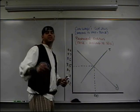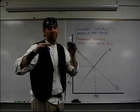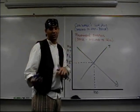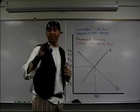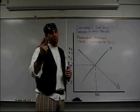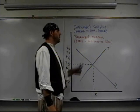Consumer surplus is the difference between what you're willing to pay for something and what you actually do pay. So when you walk into the store, you're willing to pay 50 bucks for something, you pay 30 bucks, you've got $20 consumer surplus.